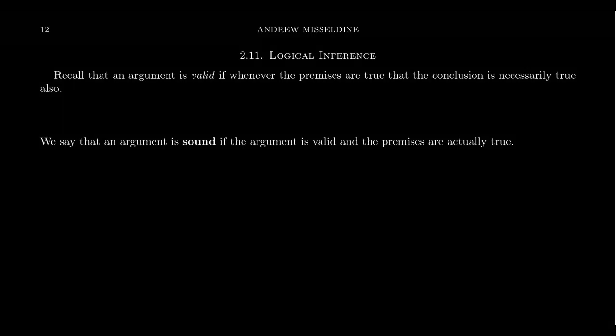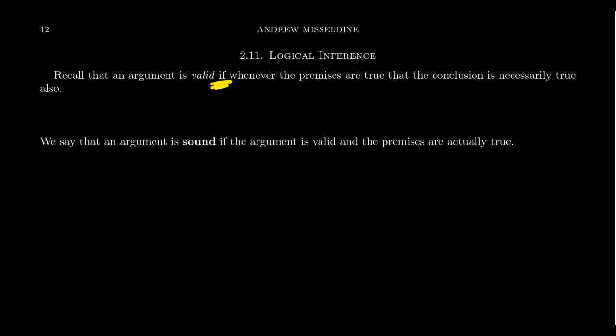Now, if your argument is valid, that means that if the premises are true, then the conclusion is true also. The big word here is "if." A valid argument is important, and we can prove conditional statements are true. But what if the premises aren't true? Then we can't necessarily guarantee the conclusion, because the valid argument only says "if the premises are true."